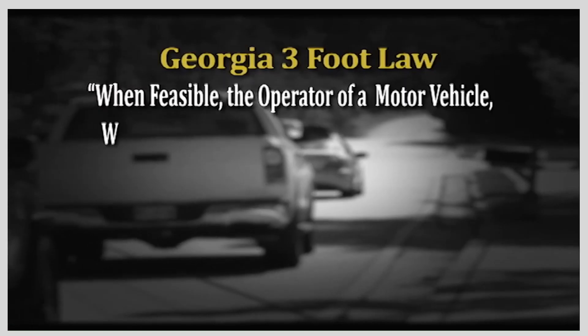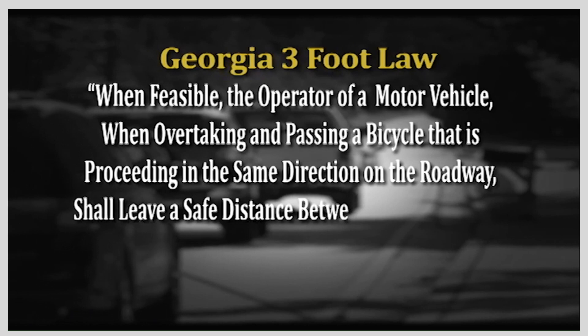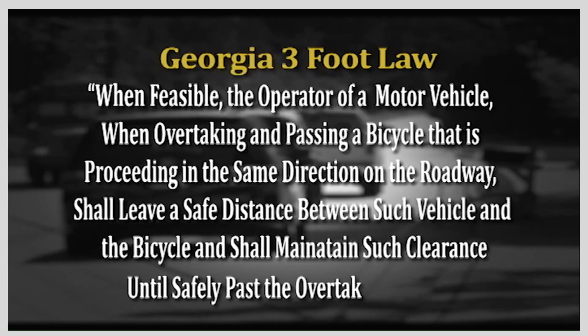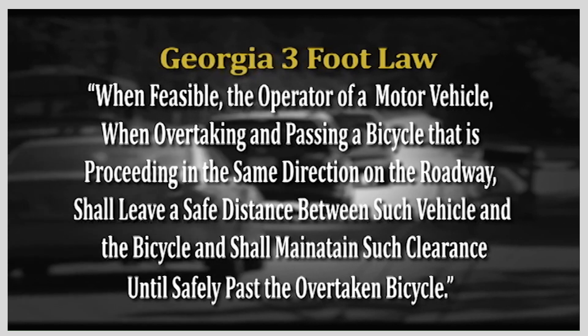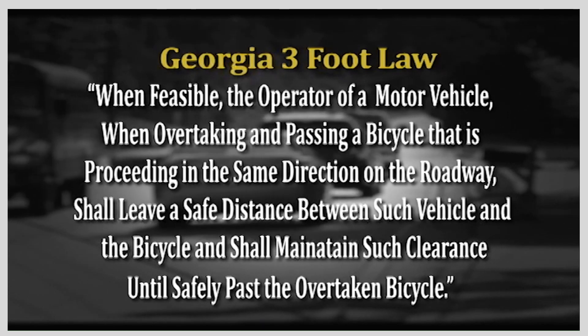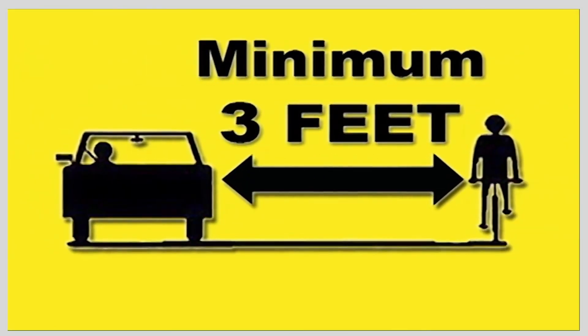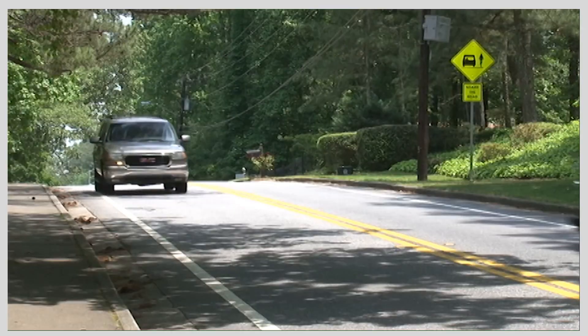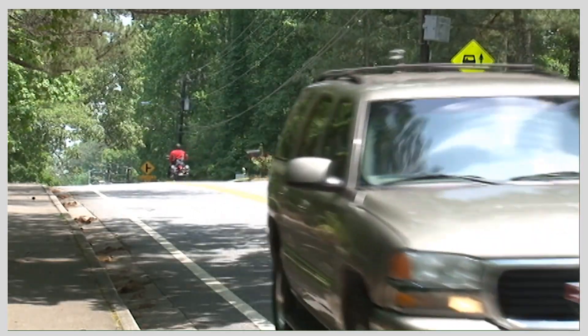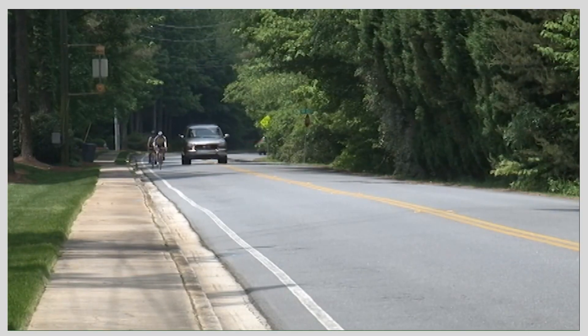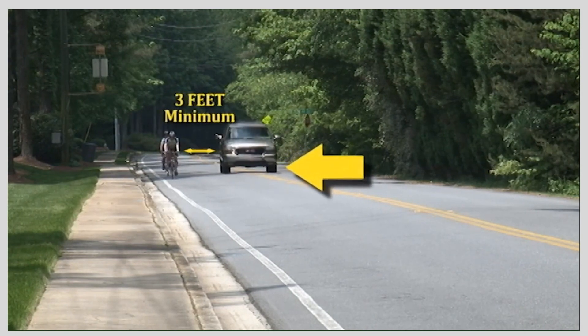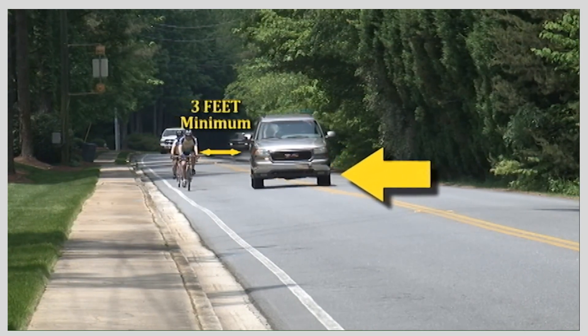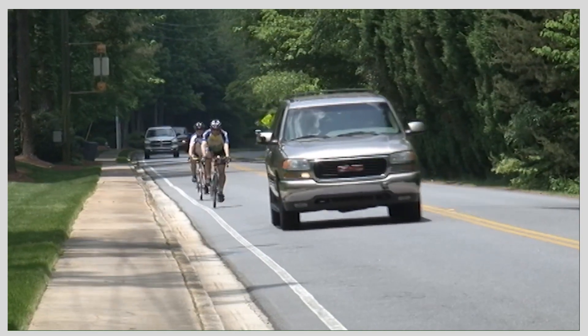Georgia's three-foot law states: when feasible, the operator of a motor vehicle, when overtaking and passing a bicycle that is proceeding in the same direction on the roadway, shall leave a safe distance between such vehicle and the bicycle and shall maintain such clearance until safely past the overtaken bicycle. A safe distance is not less than three feet. So if a vehicle is going to pass a bicycle traveling in the same direction, the vehicle should leave at least three feet between the mirror and the bicycle until it's completely past the cyclist. You can use existing street markings as a reference point — if you approach a cyclist riding next to the white line, position your vehicle so the driver's seat is at least over the center line to ensure a safe distance as you pass.